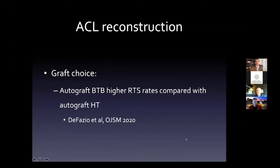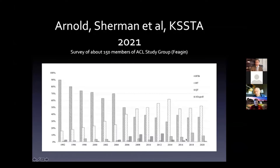That revision rate - over twice as high - is not acceptable for the athlete, but it's something we'll see more of as we improve the biologics. In terms of graft choice, a recent meta-analysis showed autograft BTB has higher return-to-sport rates compared to autograft hamstring. In the NFL, BTB autograft is still what we use. Looking at the ACL Study Group data, in the early 90s most were doing BTBs, and by 2020 it was about equal BTB and hamstrings. We also see a high incidence of allografts around 2006-2010, which then decreases after studies showed higher re-injury rates.